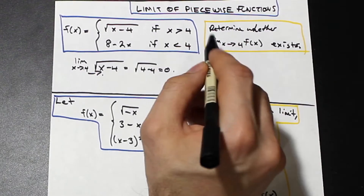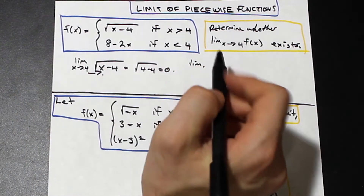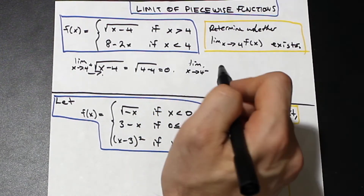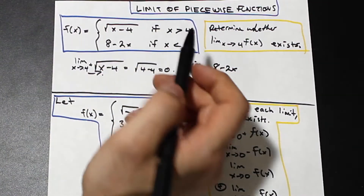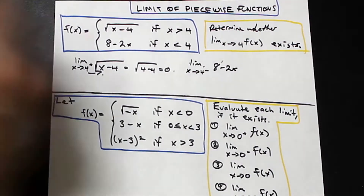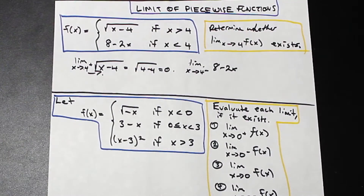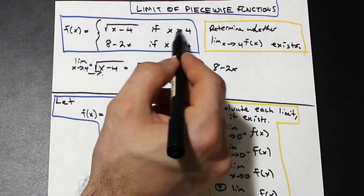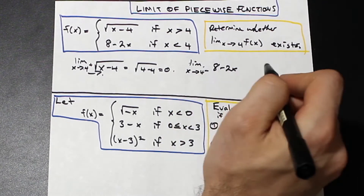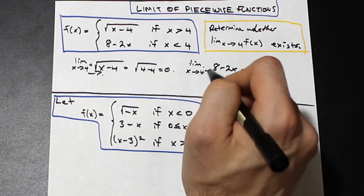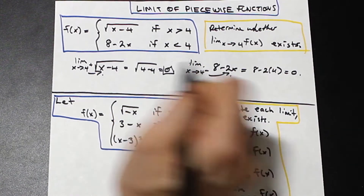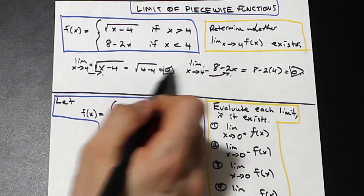Now we evaluate the limit from the left side, which is 8 minus 2x. We're doing it from the left because when x is less than 4 — to the left of 4 — the function is defined as 8 minus 2x. When x is greater than 4, we used the square root function from the right. So we plug 4 into 8 minus 2x: 8 minus 2(4) equals 0. Since the limit from the right and the left are both equal to 0, we can say that the limit exists.